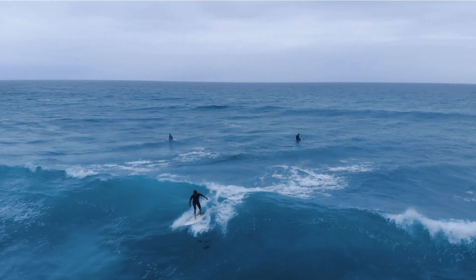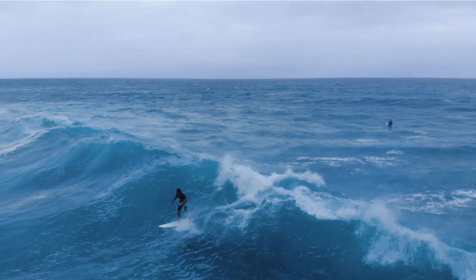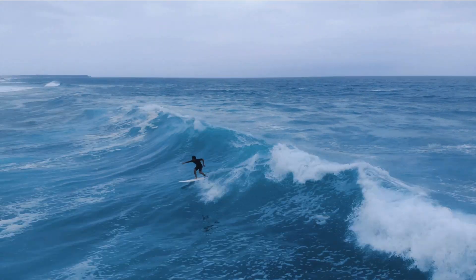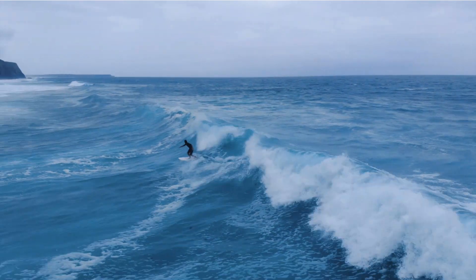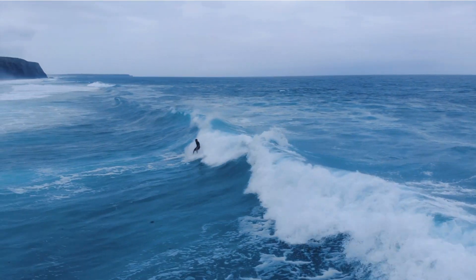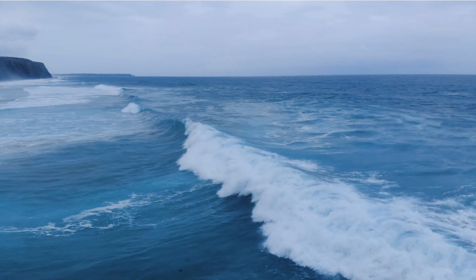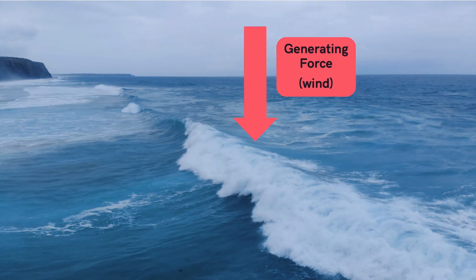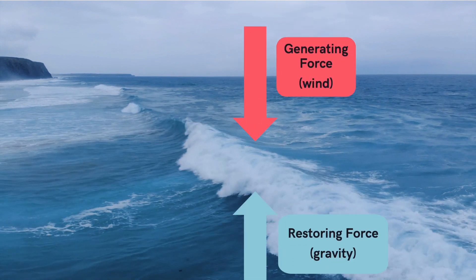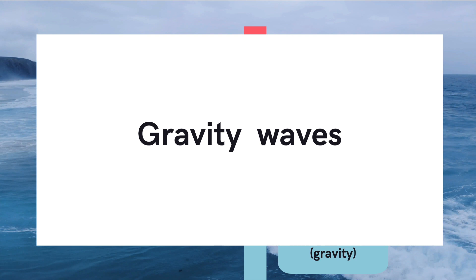Instead, when a strong wind blows on the surface of water, it breaks the hydrogen bonds and the parcel of water is displaced from hydrostatic equilibrium, such that the restoring force is now gravity. This explains the big waves that we see in our oceans.